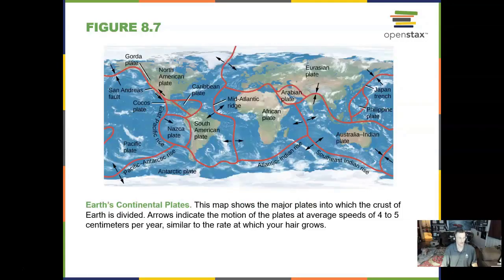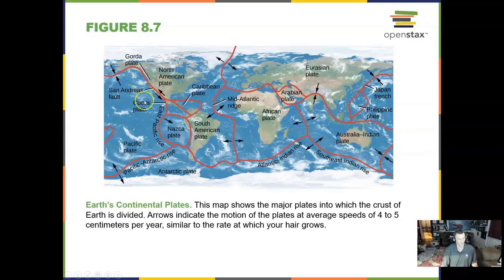Here are the continental plates. You can see the one nearest us — even to me in Missouri — I have my own little plate with a nearby fault. We see the North American plate here and the part of the Pacific plate over here, coming together to form the San Andreas Fault.